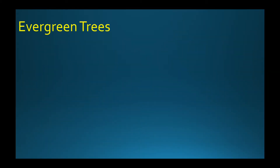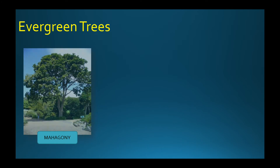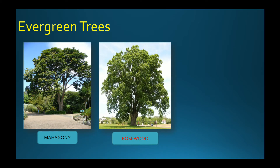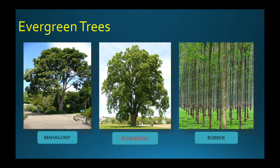Let us see the trees found in evergreen forests: Mahogany, Rosewood and Rubber. These are the same trees we have seen in equatorial forests in Brazil.